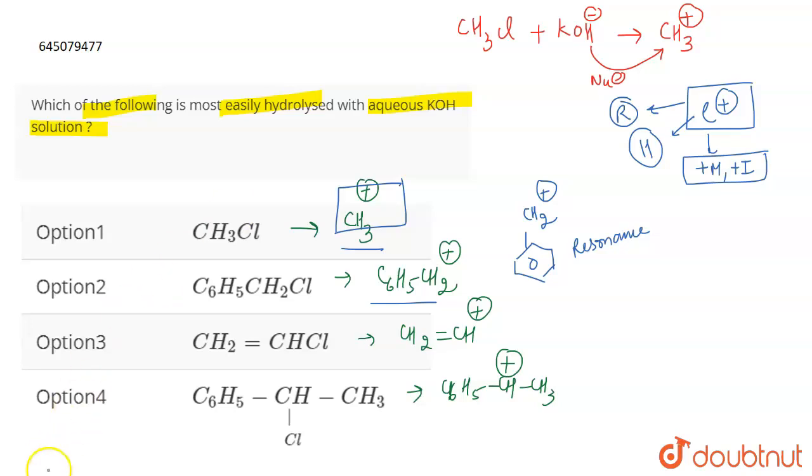If we talk about the next one, here now in here there's no conjugation happening, there's no group that is going to increase the stability of the carbocation. Therefore this is going to be less stable also. Here the carbon is sp2 hybridized, so therefore the stability is going to be less only.